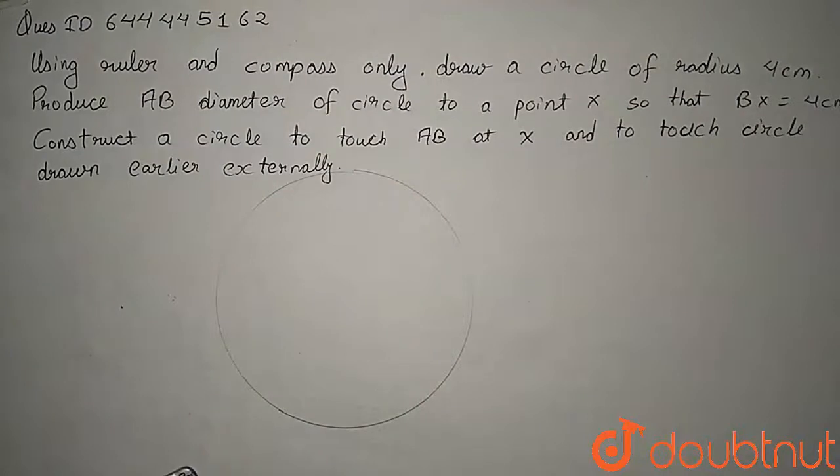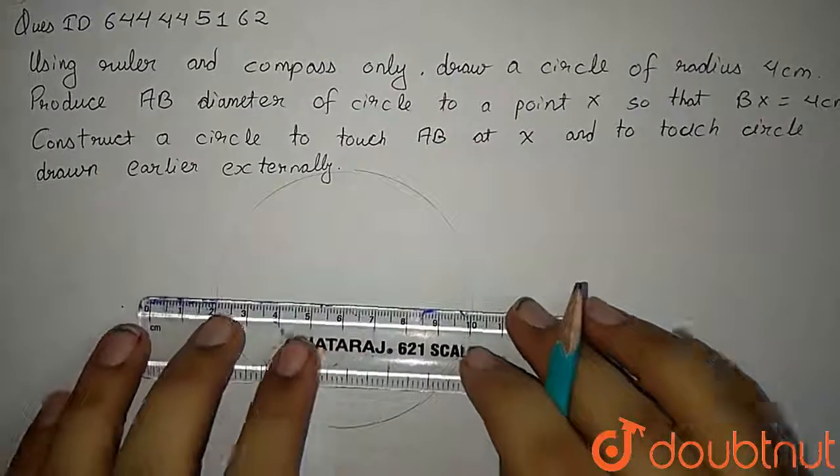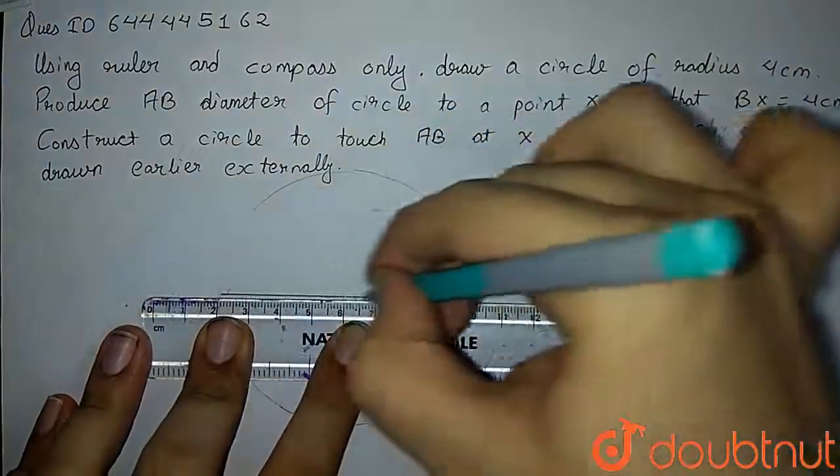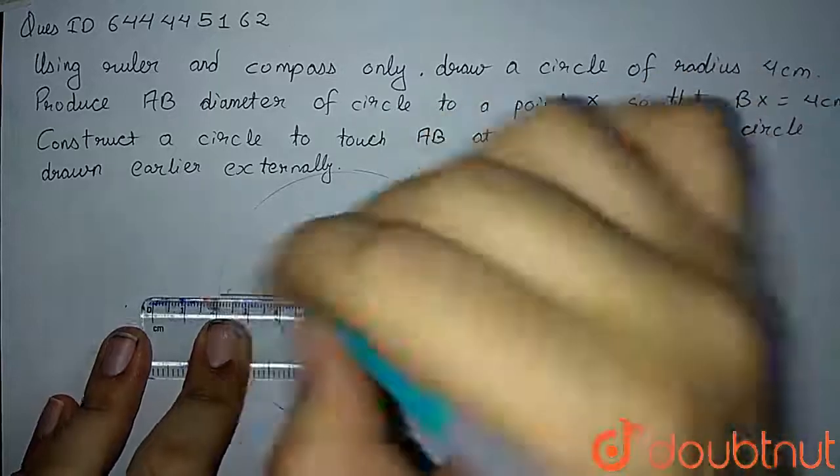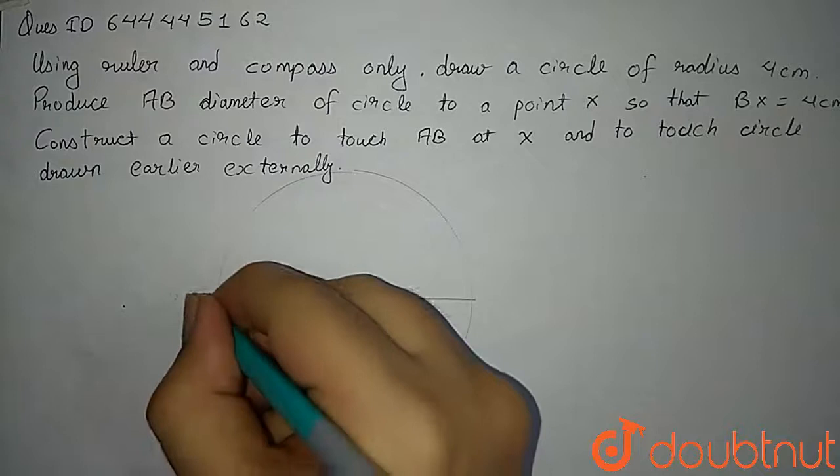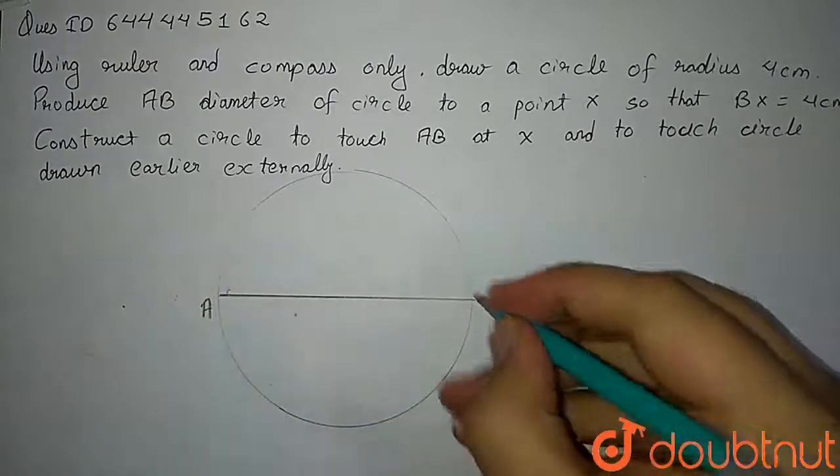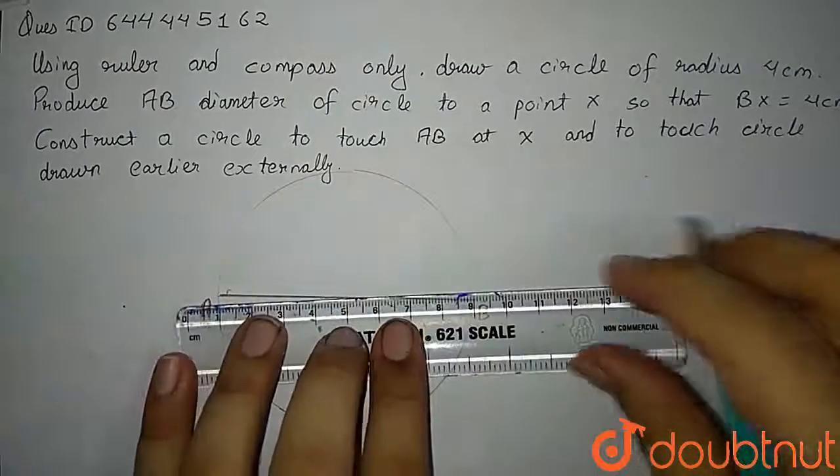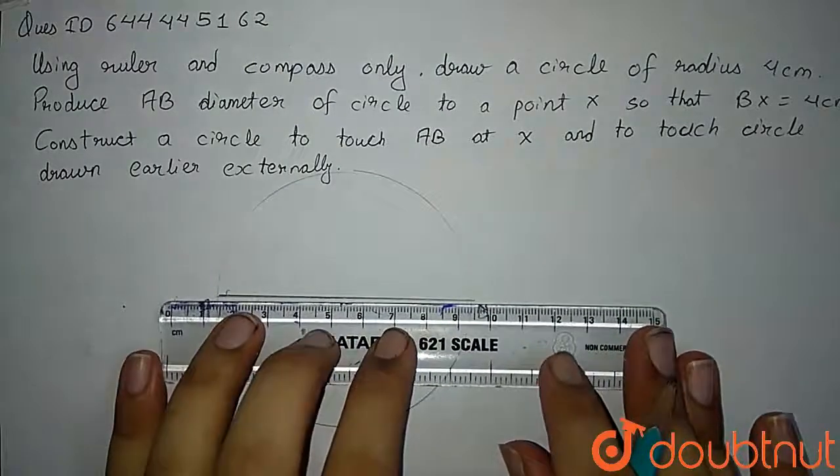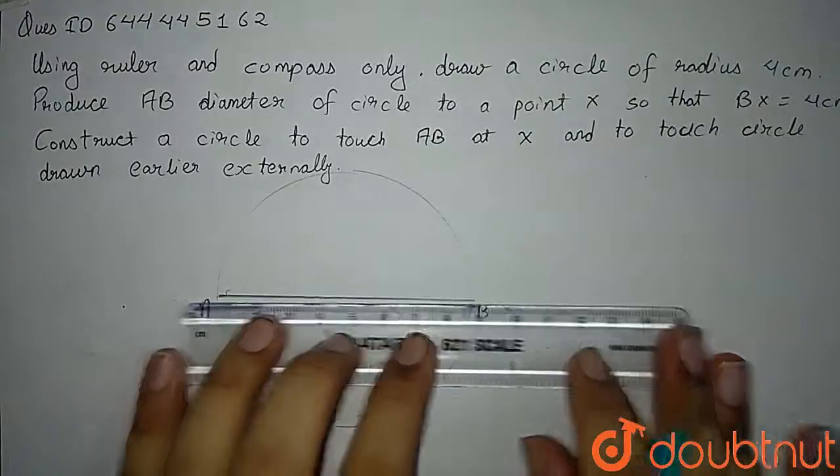Now let us create a diameter of the circle by joining two points at the opposite ends of the circle. Now this is my point A and this is my point B. Now what we have to do is produce B to a point such that BX is equal to 4 cm.